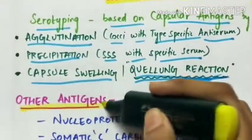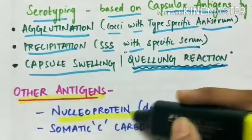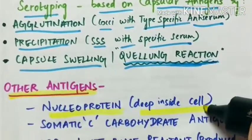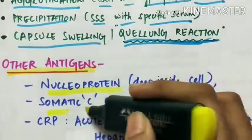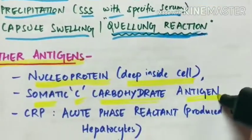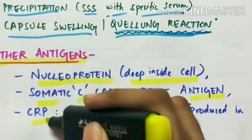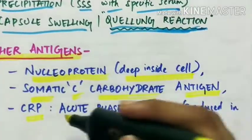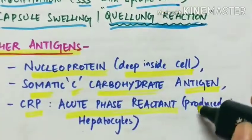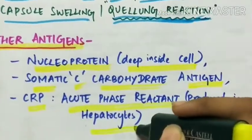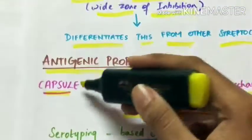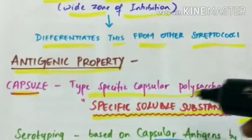Other antigens include nucleoprotein which is present deep inside the cell, somatic C-carbohydrate antigen, and CRP that is C-reactive protein which is an acute phase reactant produced in the hepatocytes. So the capsule has specific soluble substance.